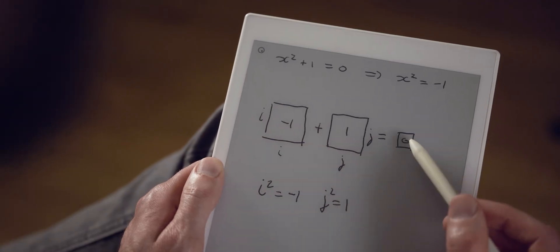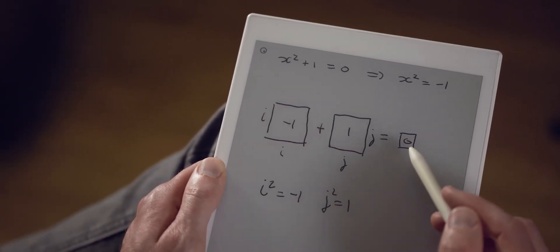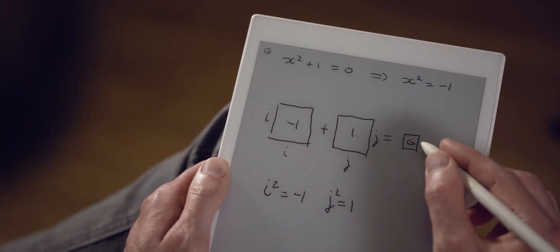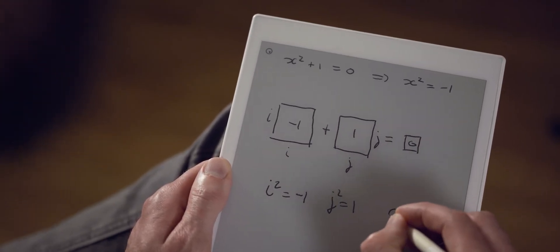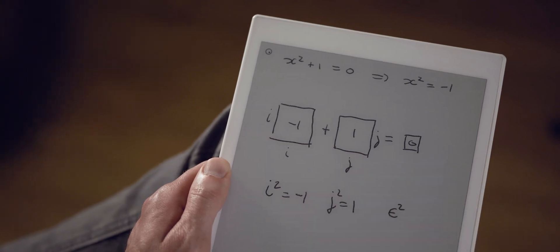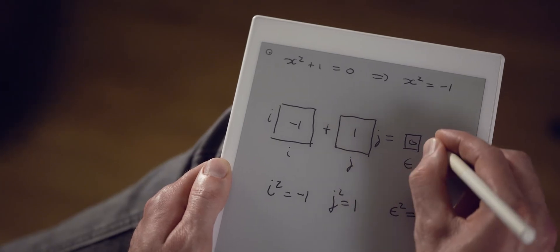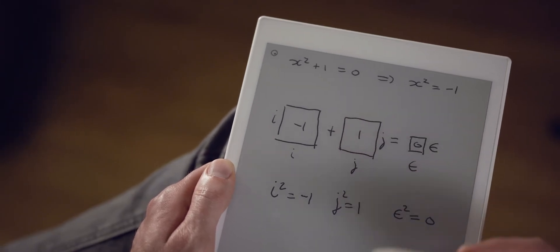What I find even more interesting is this one which has a surface of zero. But that doesn't mean that the sides have to be zero. I can also introduce a new number called epsilon such that epsilon squared is zero. Then if I take these sides to be epsilon, it also works.